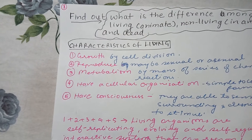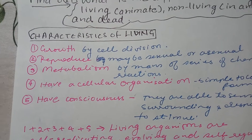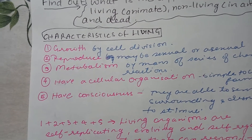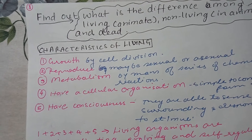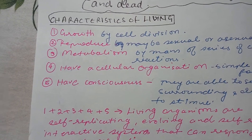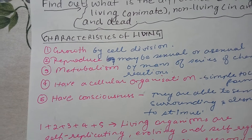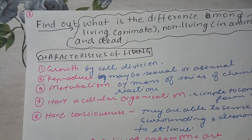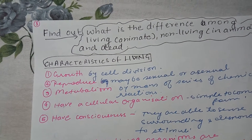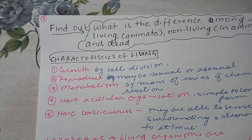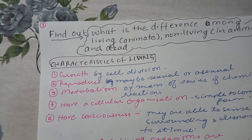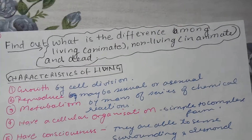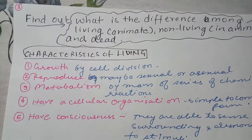The second characteristic is reproduction. Reproduction is a very essential process because each species has to continue on Earth. Before a species dies, it will reproduce. There are two categories: sexual reproduction and asexual reproduction. Different methods exist in plants and animals, but they are all divided into these two categories.